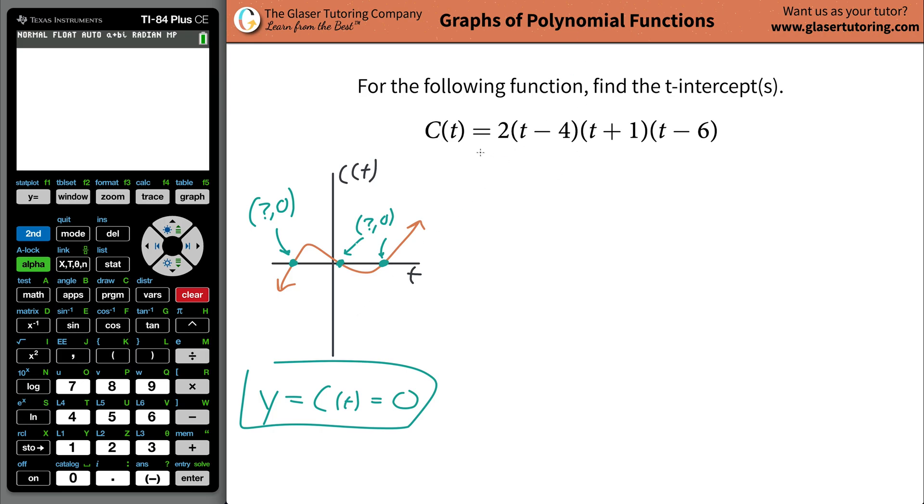Now just think about this logically for a minute. Go back to the function. What I said here is that this whole term here has to be zero and that has to equal this whole right hand side.